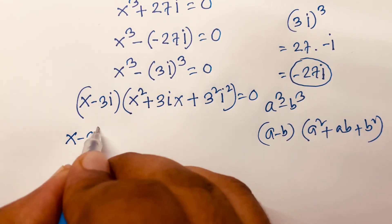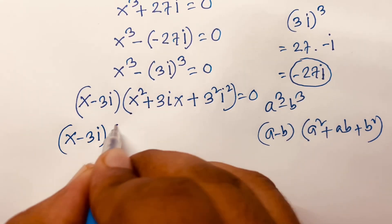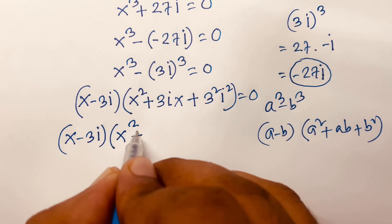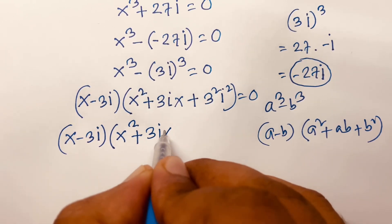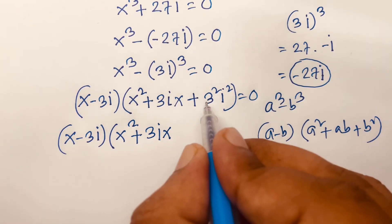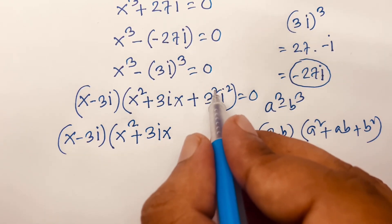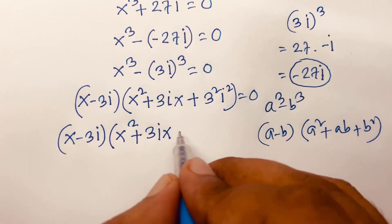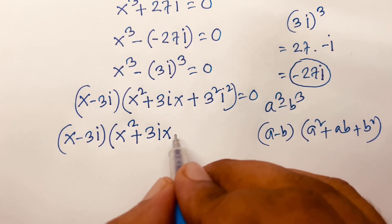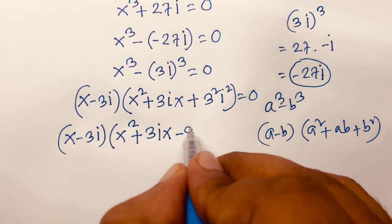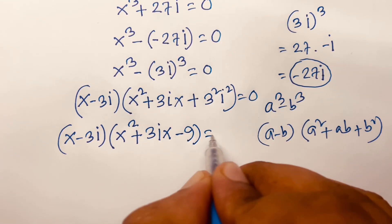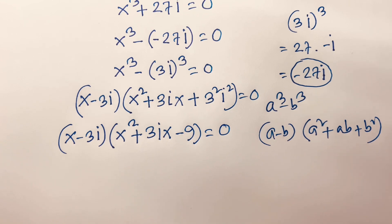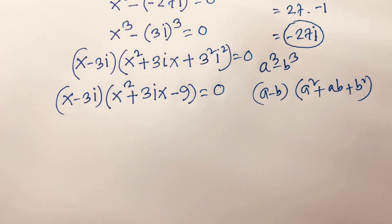Expanding (3i)² gives 9 and i² gives minus 1, so 9i² equals minus 9. The equation becomes (x minus 3i)(x² + 3ix minus 9) equals 0, giving us two cases.